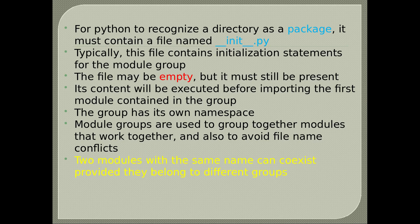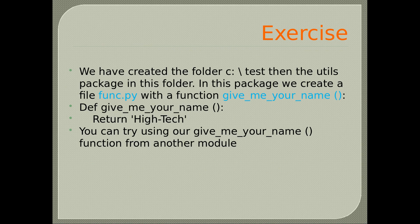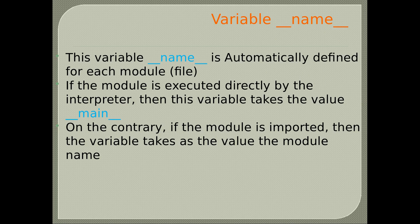Module groups are used to group together modules that work together and to avoid file name conflicts — two modules with the same name can coexist in different groups. Exercise: create the folder c:\text, then a utils package. In the package, create func.py with a function give_me_your_name() that returns 'hi'. The variable __name__ is automatically defined for each module file. If the module is executed directly, __name__ takes the value '__main__'; if imported, it takes the module name.